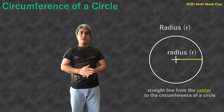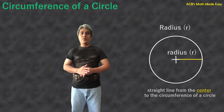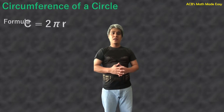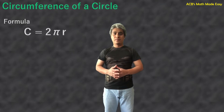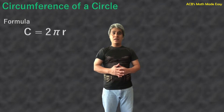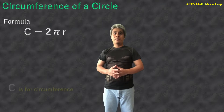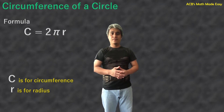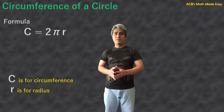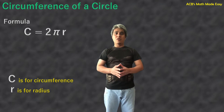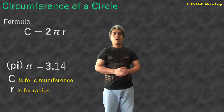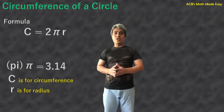To get the circumference of a circle, we need to know the formula. This is our formula for circumference of a circle: C equals 2 pi r, where C stands for circumference and r for radius. That symbol is called pi. Pi has a constant value. The value of pi is 3.14.